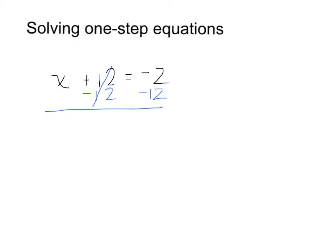So then I'm left with just x by itself. The positive 12 and the negative 12 cancel out. They add out to 0. So on the right-hand side, I have negative 2 minus 12, so x is going to equal negative 14.